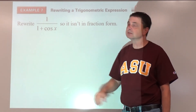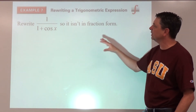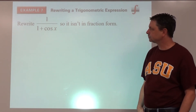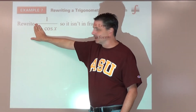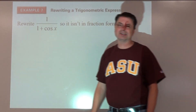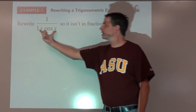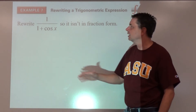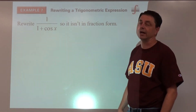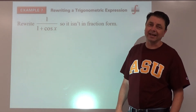Example seven is a calculus prep question: rewrite one over one plus cosine x so that it's not in fraction form. We can't simply use a reciprocal identity since we have a binomial in the denominator — we can't ignore the plus one.